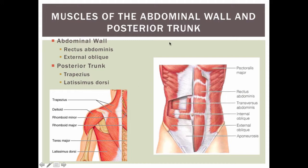Now muscles of the abdominal wall and posterior trunk include the rectus abdominis. Rectus means it is parallel with the midline, so these muscle fibers all run parallel with the midline. The external obliques are seen here. On the posterior side we have the trapezius muscle and then the latissimus dorsi, which is a broad muscle.